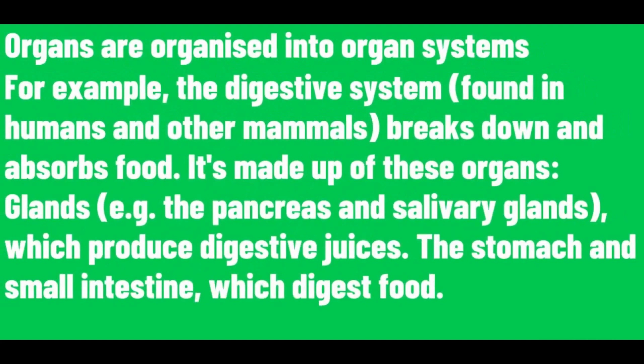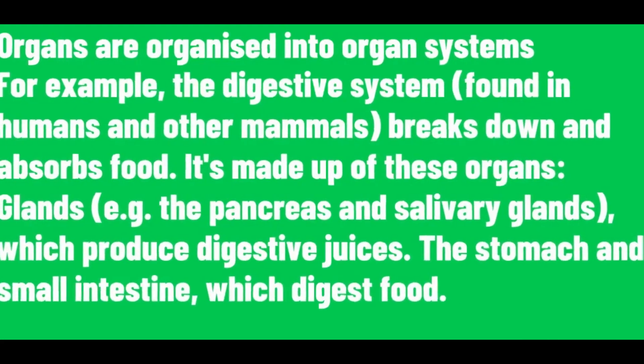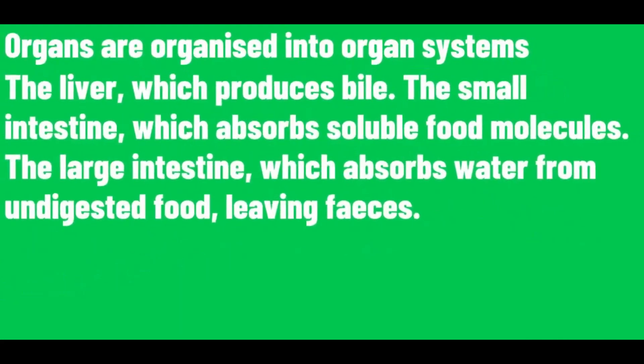For example, the digestive system breaks down and absorbs food. It is made up of these organs: glands, which produce digestive juices; the stomach and small intestines, which digest food; the liver, which produces bile; the small intestine, which absorbs soluble food molecules; the large intestine, which absorbs water from undigested food, leaving feces.